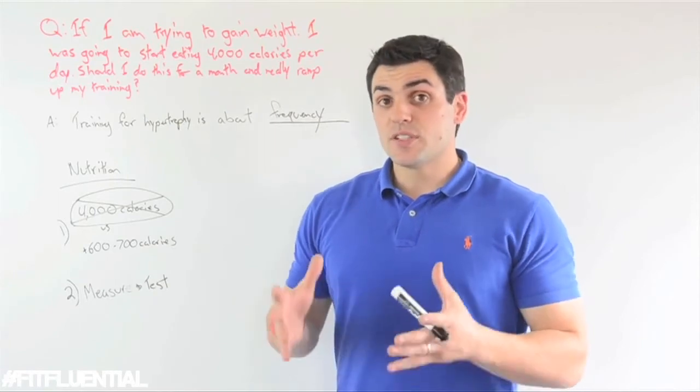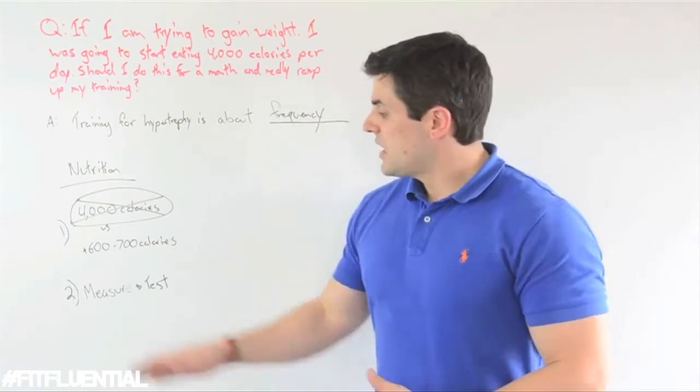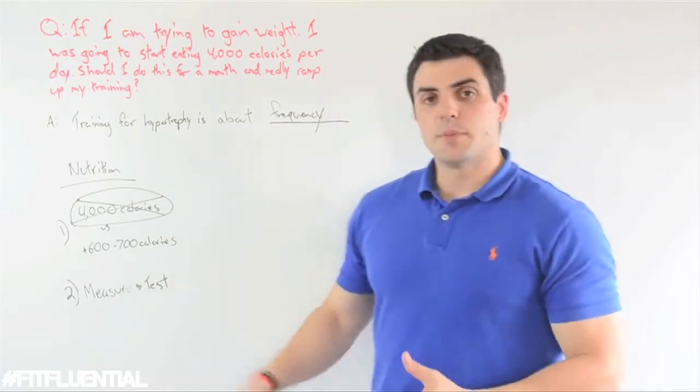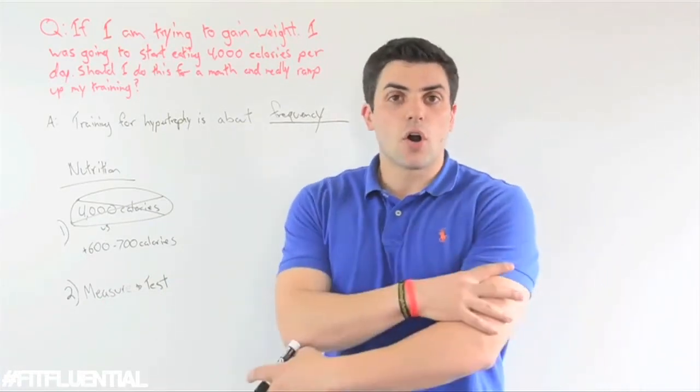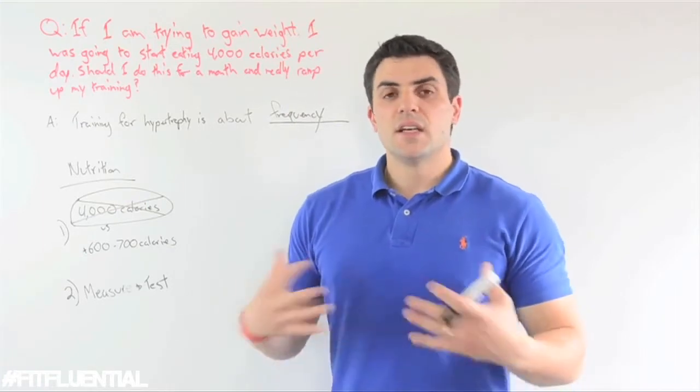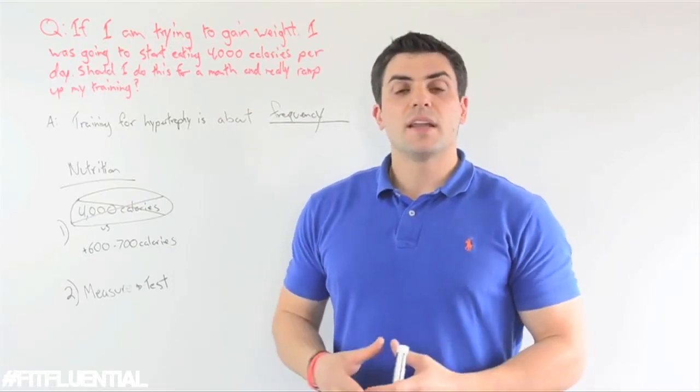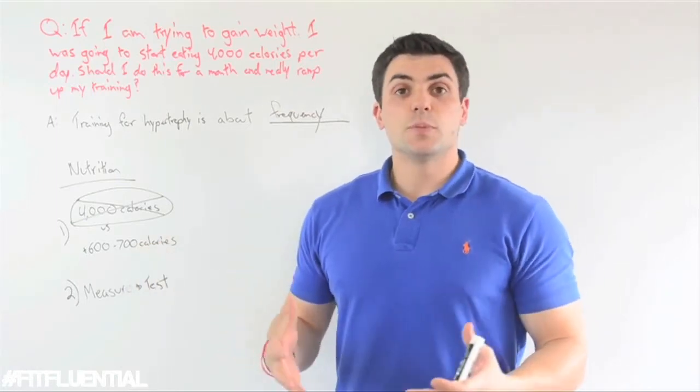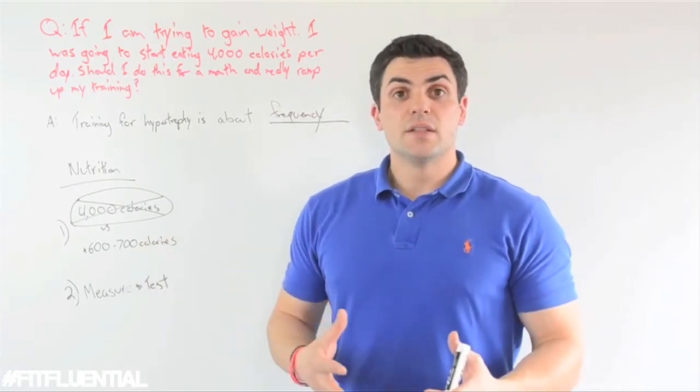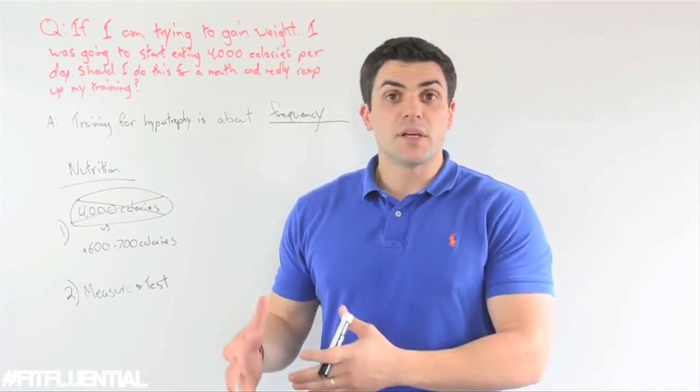Because hypertrophy is slow, the key is to be consistent. That's where measuring and testing comes into play. Take girth measurements: neck, chest, arms, waist, thighs. Take all those measurements and put this new 700 calorie shake into your meal plan for at least 2 weeks. Measure again how your body changes at the end of 2 weeks.